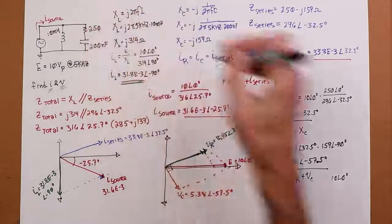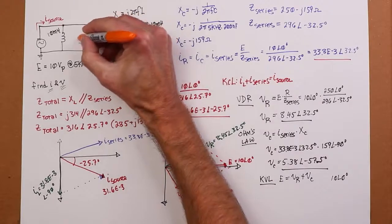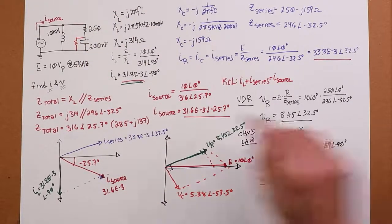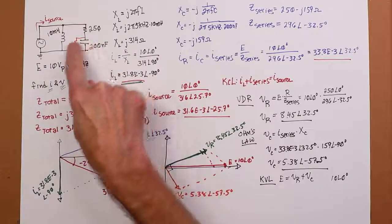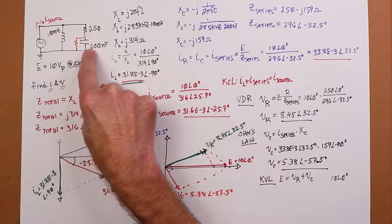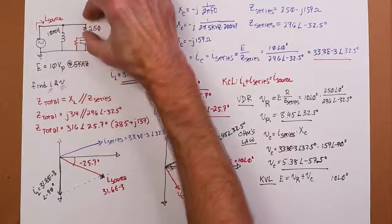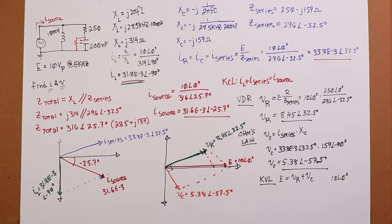Zero minus the minus 32 and a half. We could use Ohm's law to find VC. So VC will just be the series current times XC. So the I series, we know that's 33.8 mils. And the X sub C we found to be 159 at an angle of minus 90. So grinding that out, VC is going to be 5.38 at an angle of minus 57.5 degrees. Remember, voltage across cap can't change instantaneously, so it's going to lag the current.